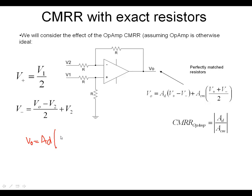So we're now looking at those terms. We've got V1 over 2 minus Vout minus V1, all divided by 2, minus V2. We've got our V+ term — the positive input terminal — for the differential mode, and then we're subtracting the second input. I made a mistake there; that should be a 2. So it's V1 over 2 minus Vout minus V2 over 2, minus V2.